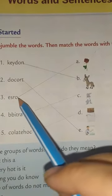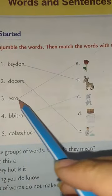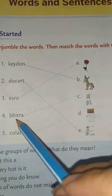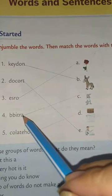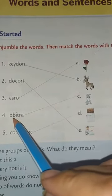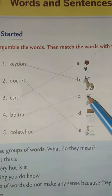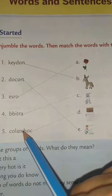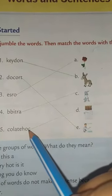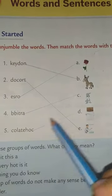Next, E-S-R-O. What happens from these four letters? It means Rose — R-O-S-E. Next, what happens from this picture? It's R-A-B-B-I-T — Rabbit. So we have to match the fourth one with C. Next is C-O-L-A-T-H-O-C — maybe Chocolate. C-H-O-C-O-L-A-T-E — Chocolate. So fifth one matches with D.